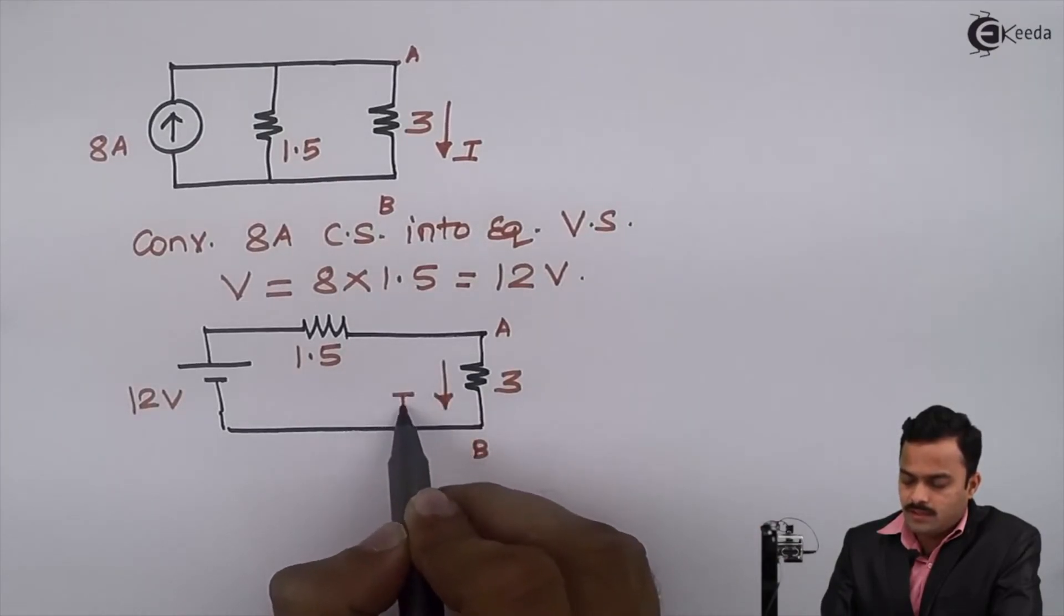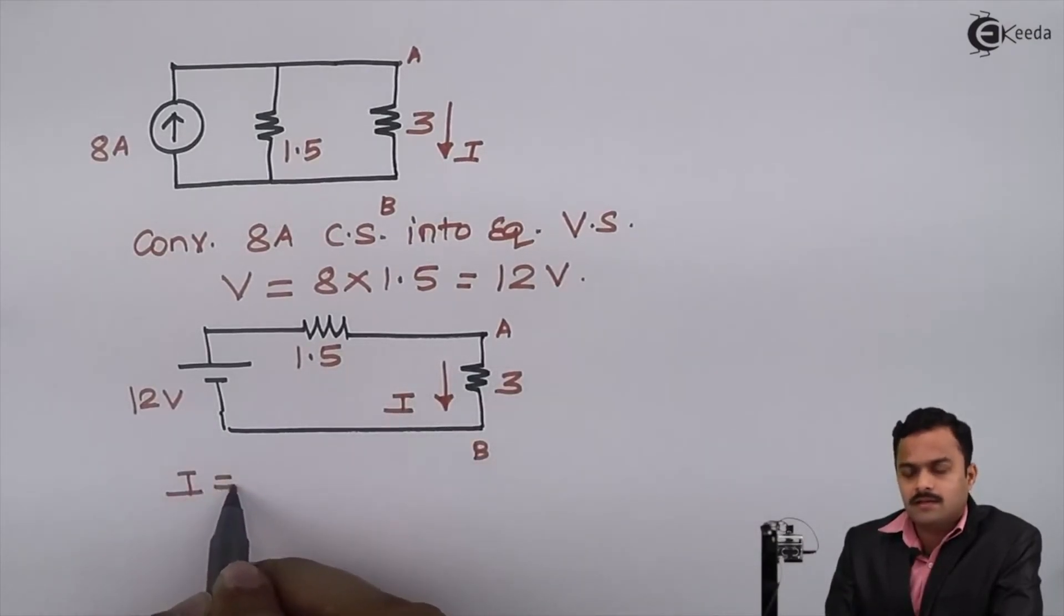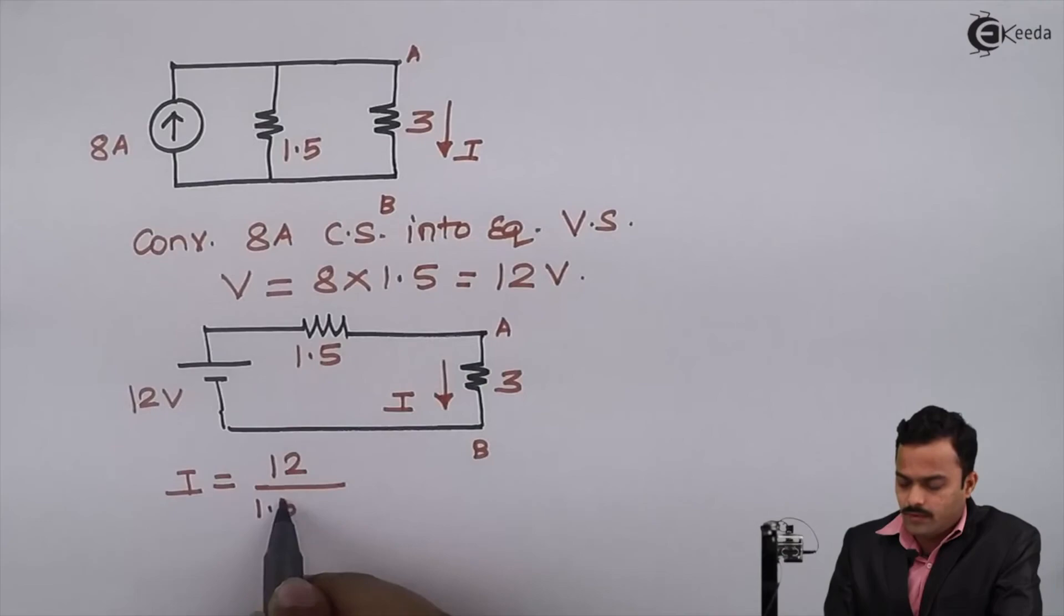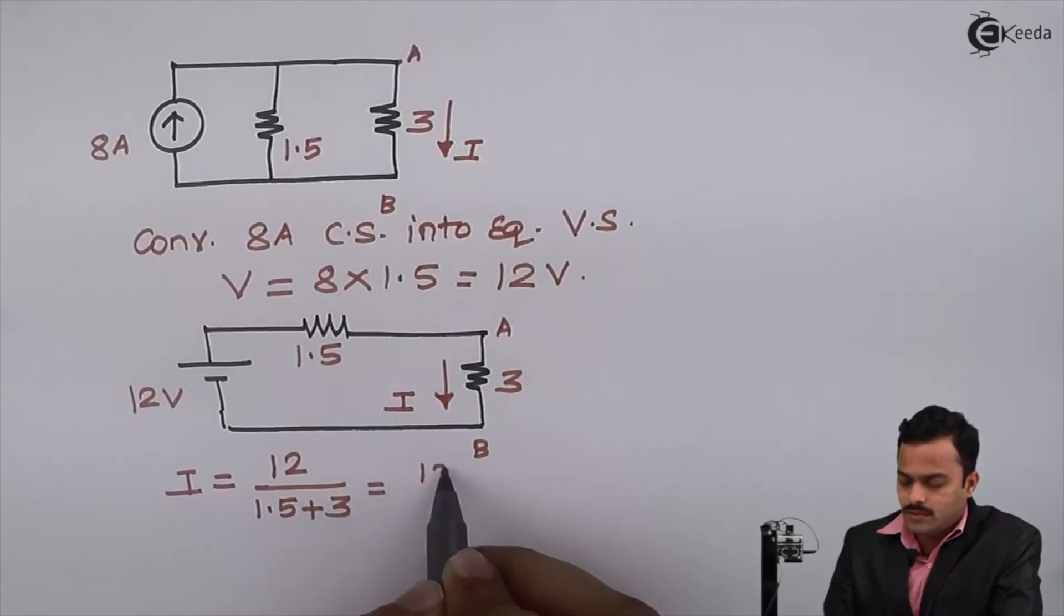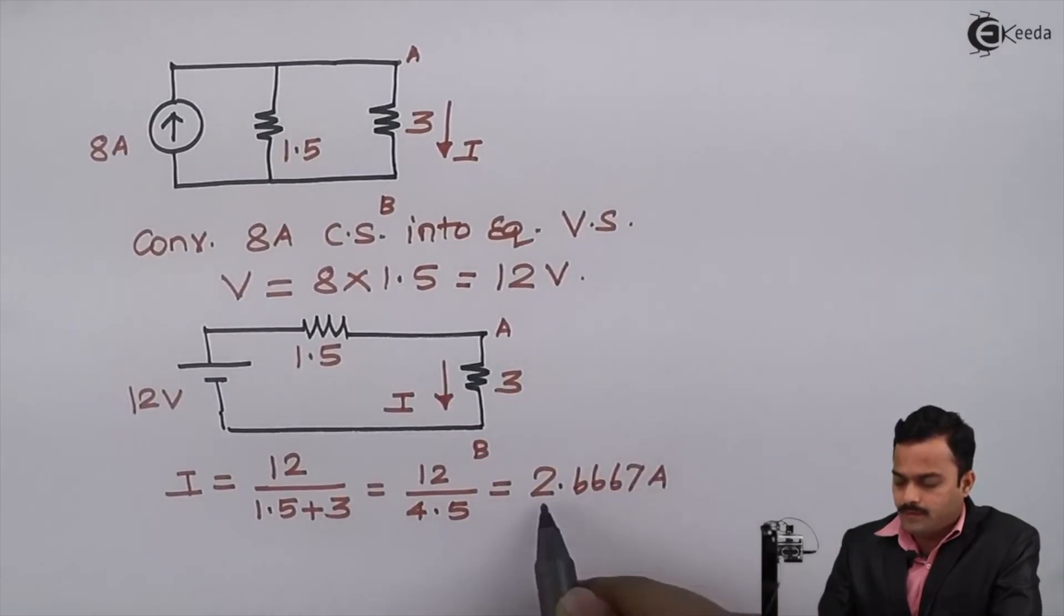So now I can use simple Ohm's law and I can say the current I is total voltage 12 divided by total resistance in the circuit 1.5 plus 3, so it is 12 upon 4.5, and the answer I will get is 2.6667 ampere.